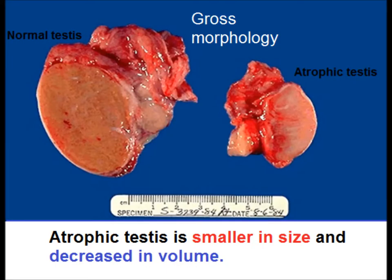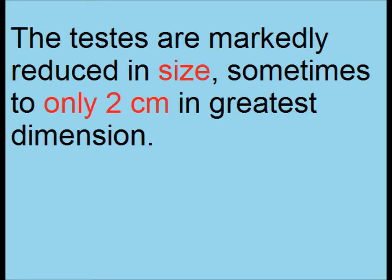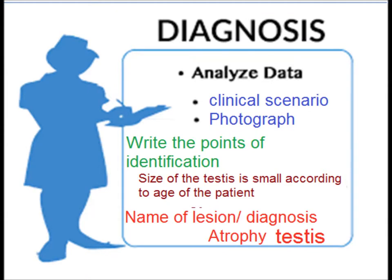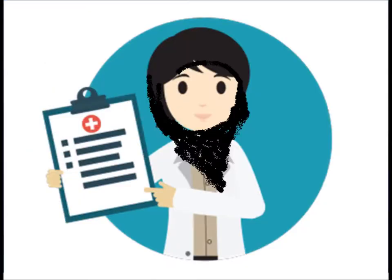In gross morphology, atrophic testes are smaller in size and decreased in volume compared to normal testes. Sometimes the size is only 2 cm in greatest dimension. The diagnosis involves analyzing the data along with the clinical scenario and photograph. Points of identification include: size of the testes is small according to the age of the patient. The diagnosis is atrophic testes.